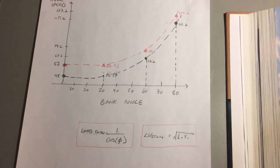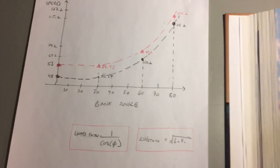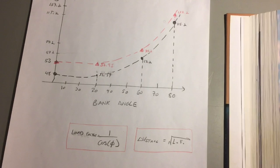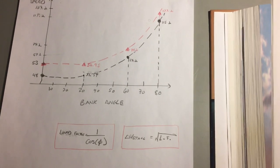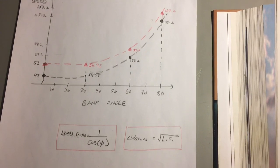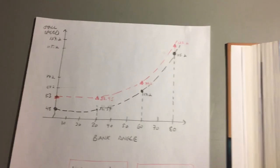For those of you who are more mathematically inclined, the load factor is one over the cosine of the bank angle phi, and the stall speed or the increase in stall speed is the square root of that load factor, and you can reconstruct this curve.